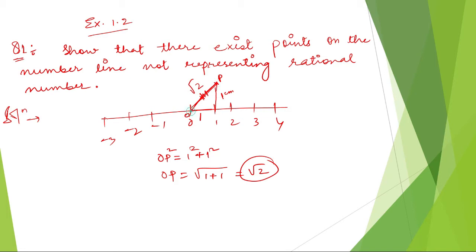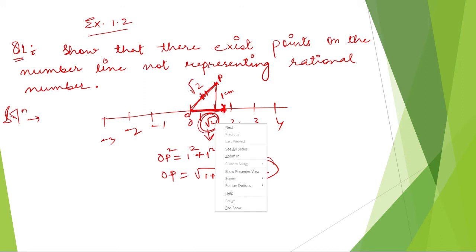You take this line with the help of your compass and draw it on the number line. You can represent this point as √2. Now √2 is an irrational number which you can represent on a number line — √2 is not a rational number and you can represent it on the line.